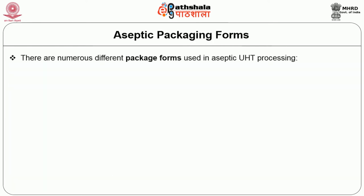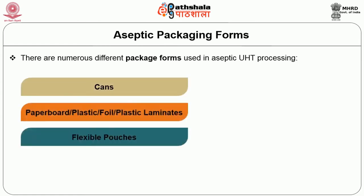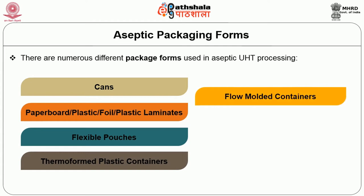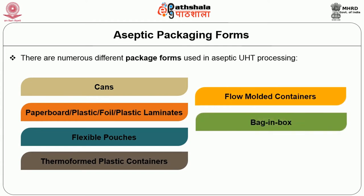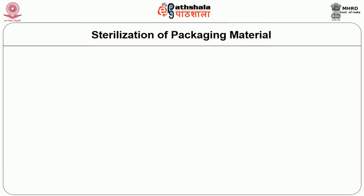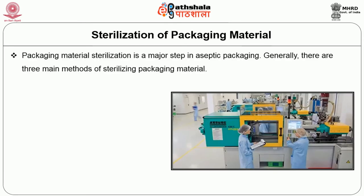Different types of aseptic package forms used in aseptic UHT processing include cans, paperboards, flexible pouches, thermoformed plastic containers, blow molded containers, bag-in-box, and bulk totes. Sterilization of the packaging material is a major step in aseptic packaging.